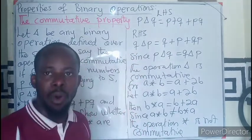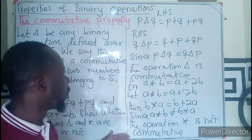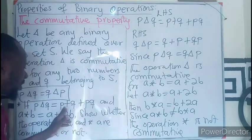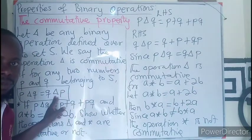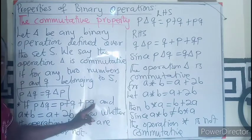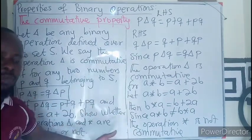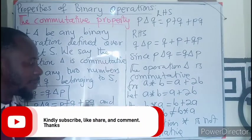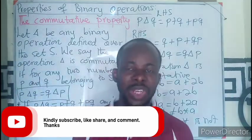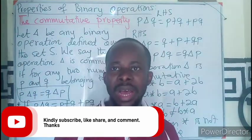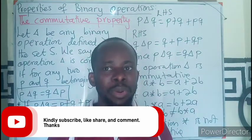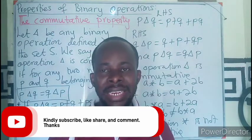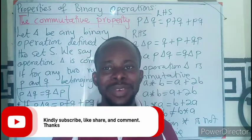We can see that to define a commutative property, it is always based on the definition of the operator. If the operator is defined well, we could either have a commutative property or non-commutative property. I believe you can follow this approach in solving questions similar or in relation with commutative property and binary operations. Thank you so much for watching. If you like, don't forget to share, like, and comment. Subscribe if you are new. Bye bye.